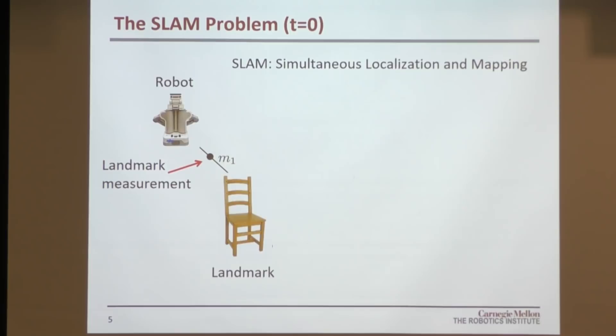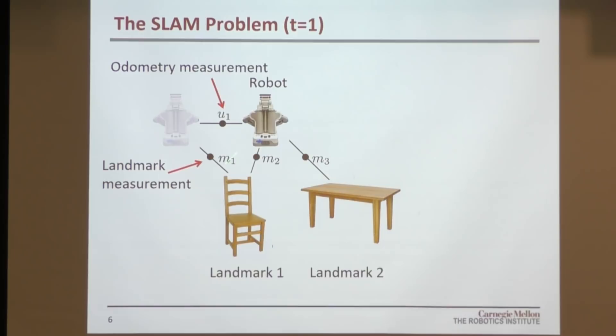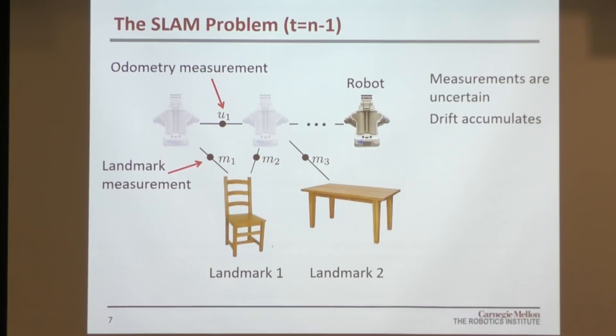As the robot moves through the environment, it uses odometry — for example, wheel encoders telling it that it moved one meter forward. From its new location, the robot can perceive the environment again, re-observe the chair, and see a new object like a table. This gets more interesting as the robot drives around for a while, because sensor measurements are uncertain. Even a laser rangefinder has some uncertainty, and if you add up these uncertainties over time, you get drift. The position estimate becomes off, and the map being created is also off because it relies on that position estimate.